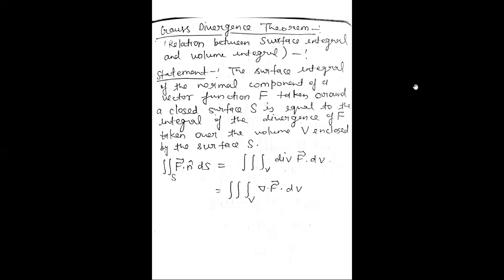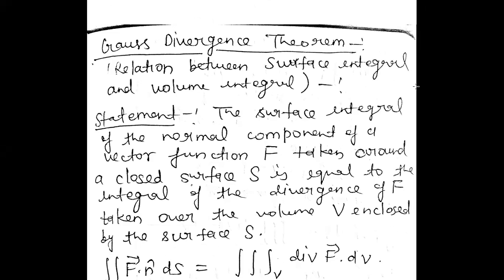Gauss Divergence Theorem. So Gauss Divergence Theorem establishes a relationship between surface integral and volume integral. Through the Gauss Divergence Theorem, if you have a double integration surface integral, you can convert it into triple integration — going from surface integral to volume integral.